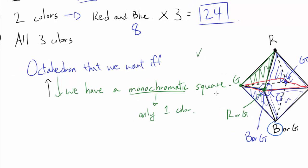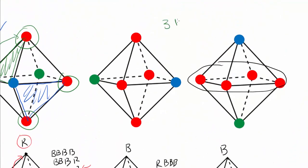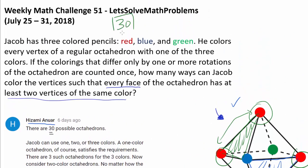So we've proven the equivalence. Now how many octahedrons have a monochromatic square? Just three — once you pick the color for the square, the other two vertices must be the remaining two colors, and swapping those two is equivalent by rotation. So there are 3 three-color cases. Our final answer is 3 (one color) + 24 (two colors) + 3 (three colors) = 30.